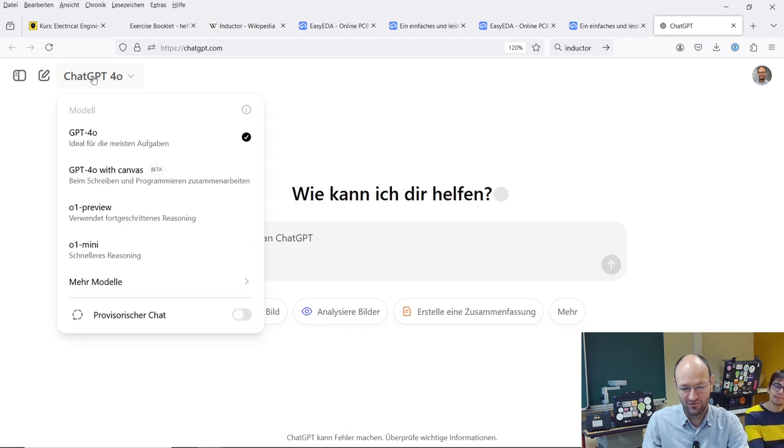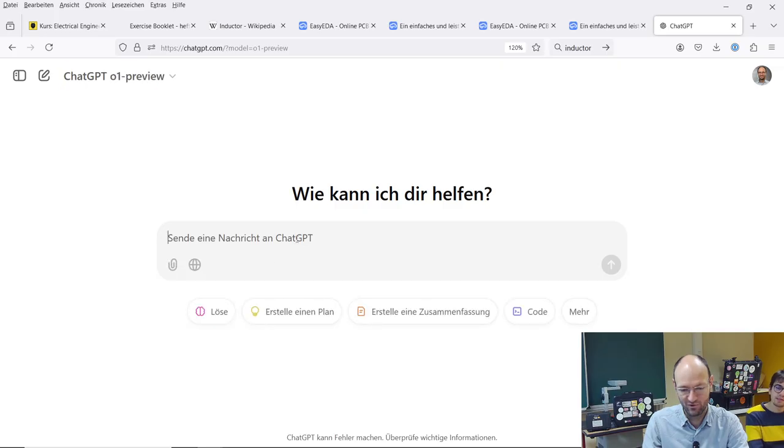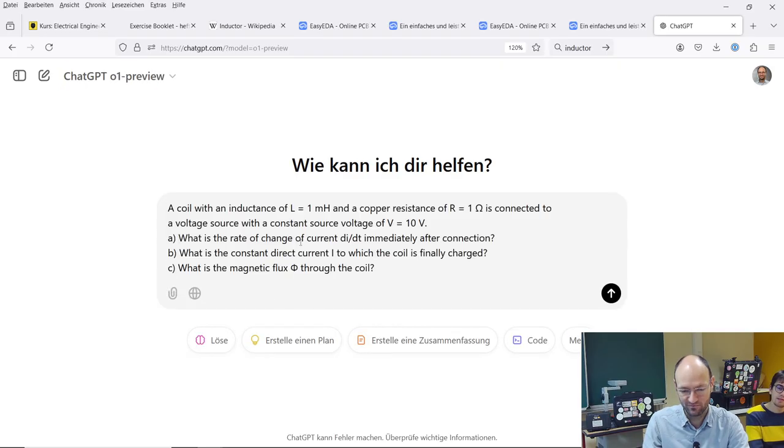So we have ChatGPT 4.0, maybe we should switch to 4.0 preview, which is said to be the best one. We give this task, a coil with some inductance, and everything looks nice. So we will just ask.